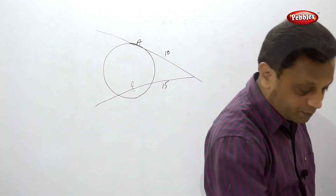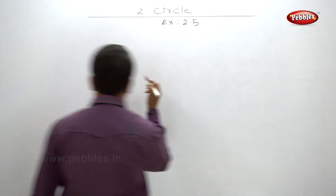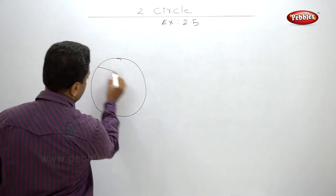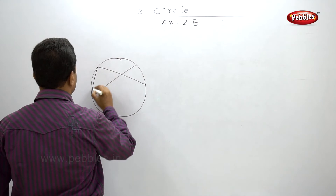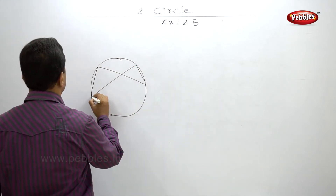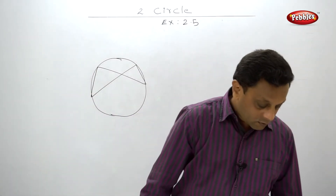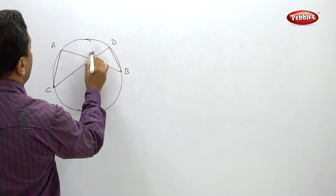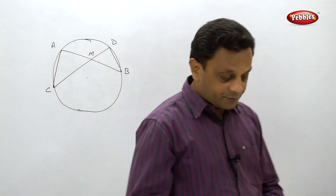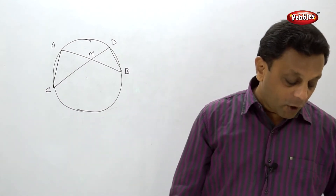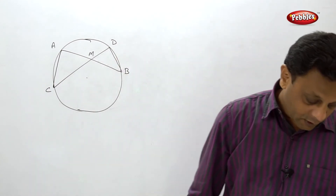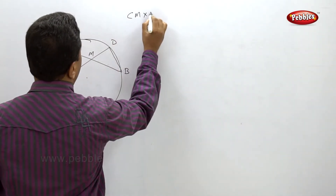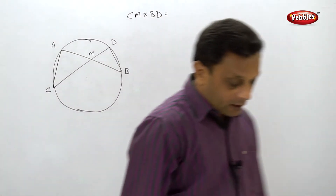In the fourth problem, a figure is given with one circle. Point M in the interior of the circle is the point of intersection of two chords AB and CD of the same circle. Show that CM into BD is equal to BM into AC.